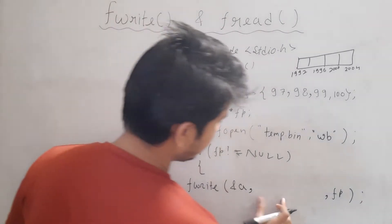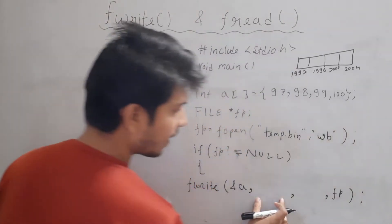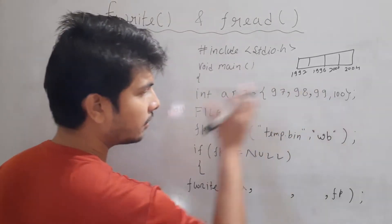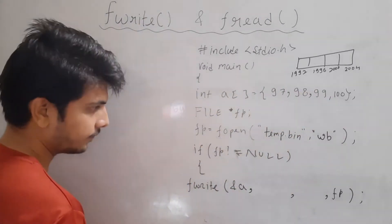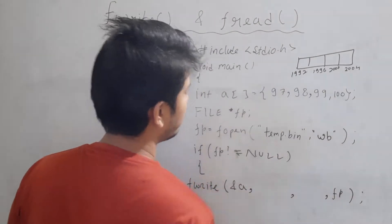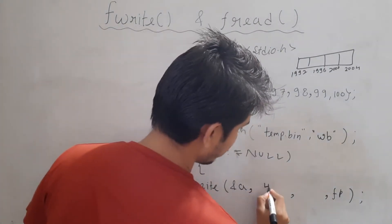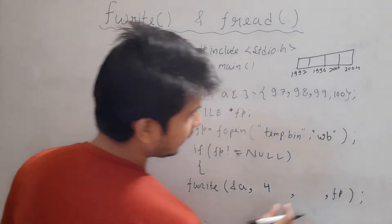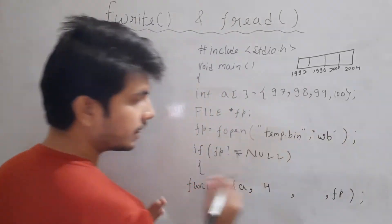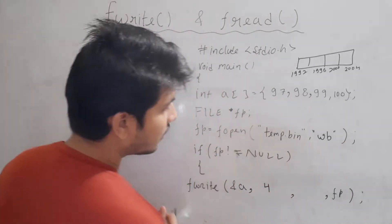We have to specify the file stream. Now in the second argument, I have to tell how many bytes of data you want to write. Let's say I want to write 4 bytes, so I will write 4. And then in the third argument, I have to tell how many consecutive times you want to write to this location.